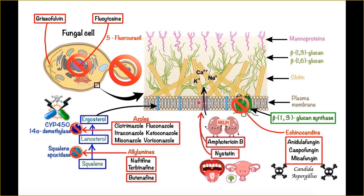The next group is amphotericin B and nystatin. These drugs remove calcium from the cell, leading to cell death, but they are very toxic. We also have echinocandins — anidulafungin, caspofungin, and micafungin. These drugs are inhibitors of the beta-1,3-glucan synthase enzyme, which is required for synthesis of the fungal cell wall, and they are mostly used for the treatment of Candida and Aspergillus infections.